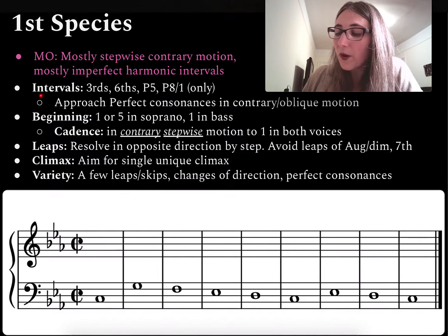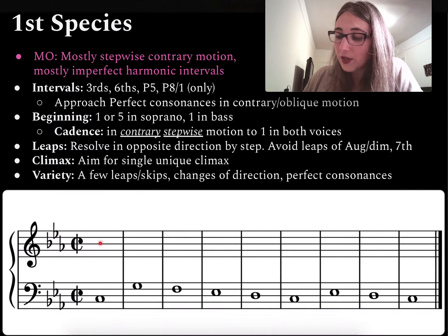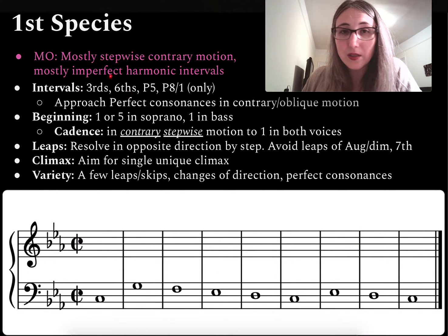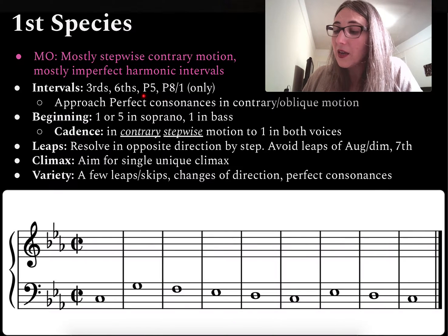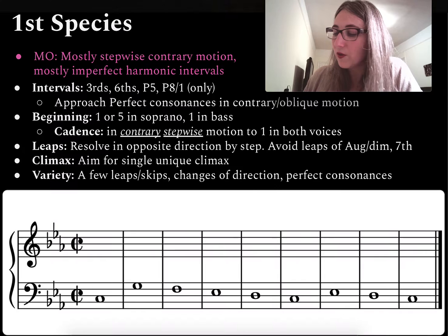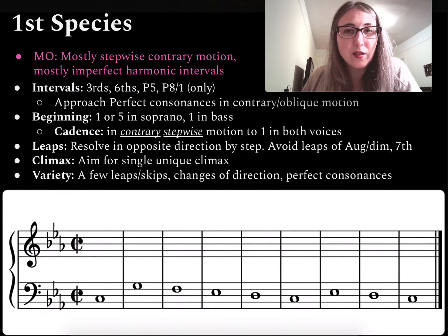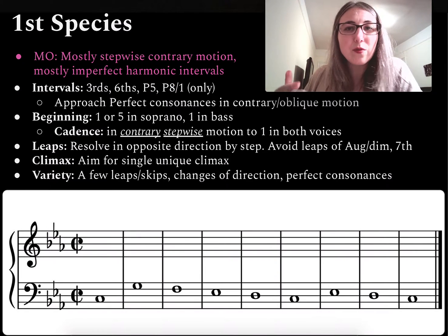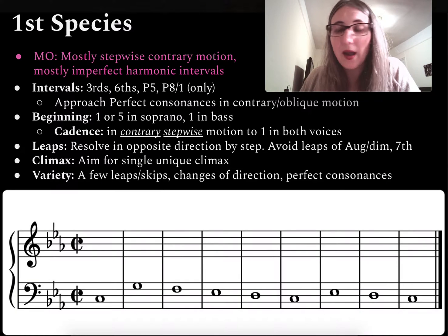I want mostly smooth, mostly contrary motion with what's going on in the cantus firmus — so if it goes down, I want to try to move up if I can. In first species counterpoint, the only harmonic intervals allowed — the only intervals between the voices — are imperfect consonances (thirds and sixths) and perfect consonances (fifths, octaves, and in some cases unisons), which are usually reserved for the beginning and end. It should be mostly imperfect consonances because that creates a nice richness and more movement in the line, with just a couple perfect consonances for variety.